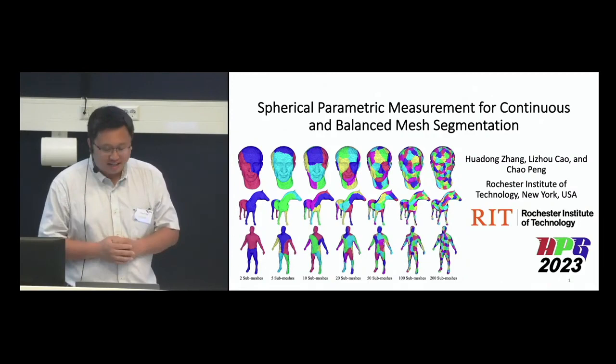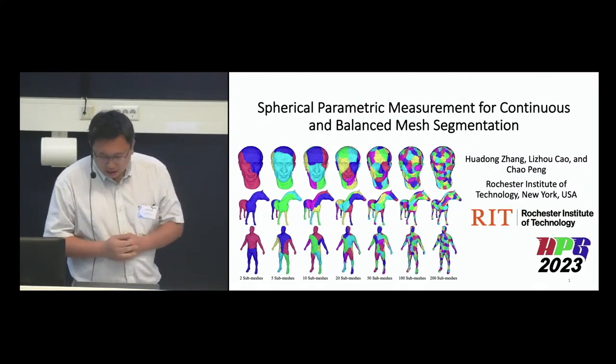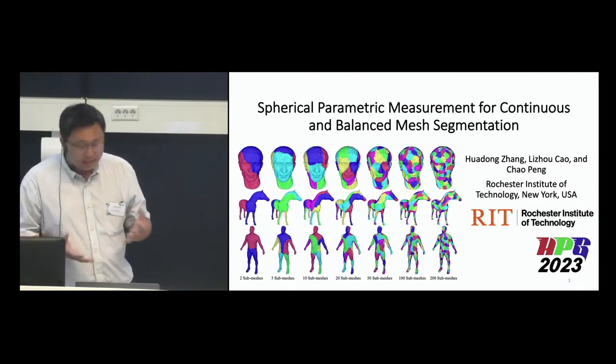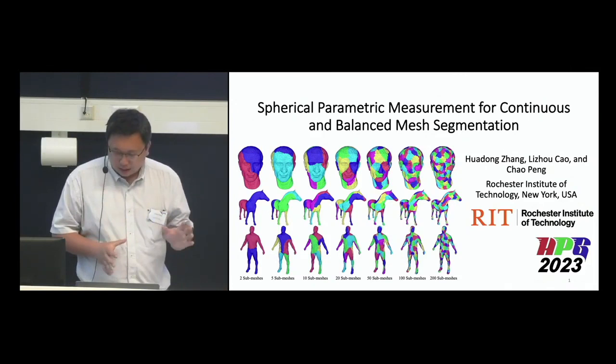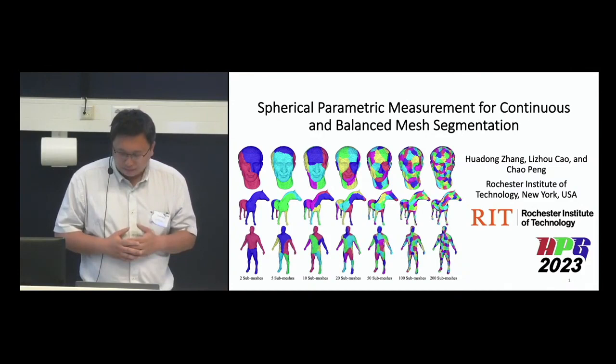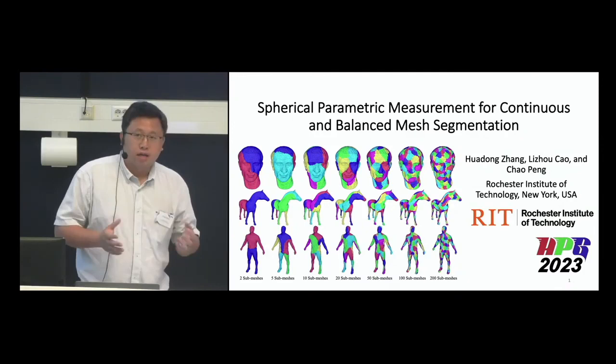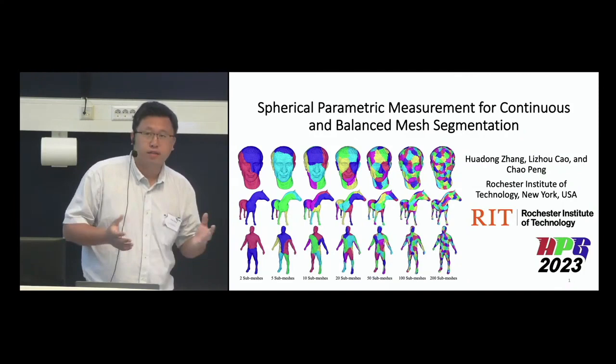In this work we present a parallel algorithm for segmenting a mesh into a balanced mesh structure. By 'balanced' we mean the submeshes contain an equal number of triangles. This structure has the potential to improve the utilization of parallel computing architectures in many geometry processing applications such as level of detail and mesh compression. We demonstrate these two applications at the end of the slides.